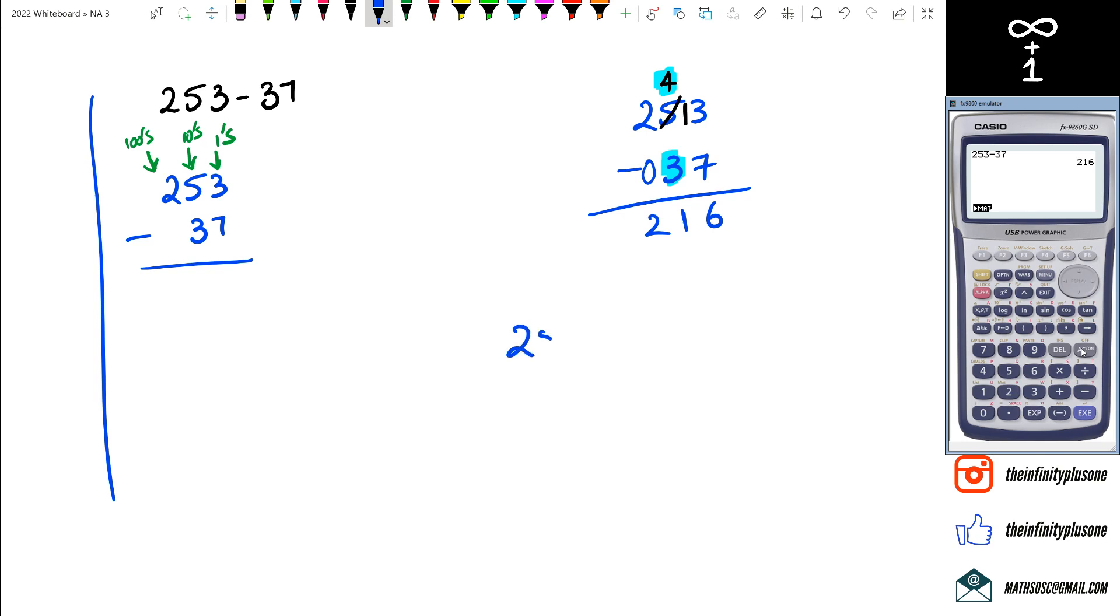Because if you think about it, 253, we can split this up as 200 plus 50 plus 3. Now if you think about it, the number below, we're taking away 37. There's no 100, so we don't have to worry about it. We've got a 30 here, and we've got 7 there. Because remember, 30 plus 7 is 37.